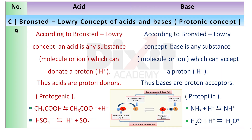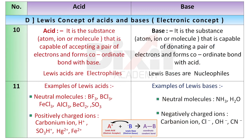Let's discuss the Lewis concept of acids and bases, also known as the electronic concept of acids and bases. According to Lewis concept, an acid is a substance — atom, ion, or molecule — that is capable of accepting a pair of electrons and forms a coordinate bond with a base. Lewis acids are electrophiles.